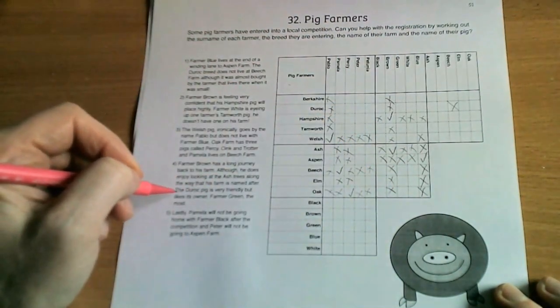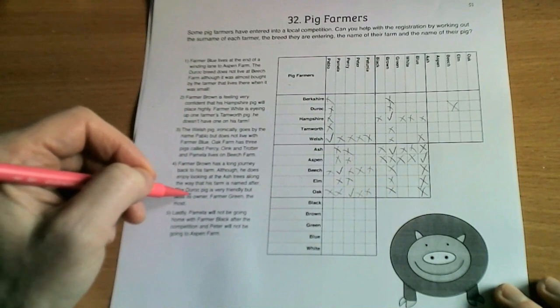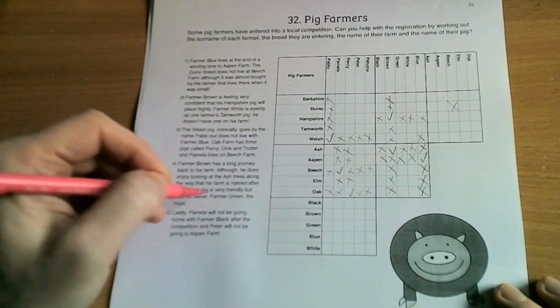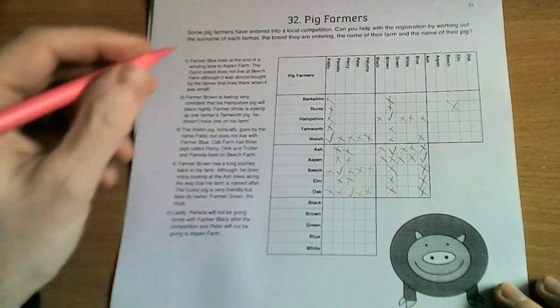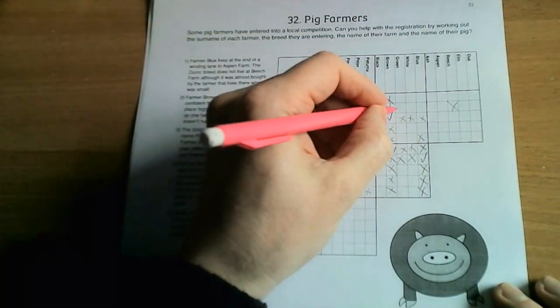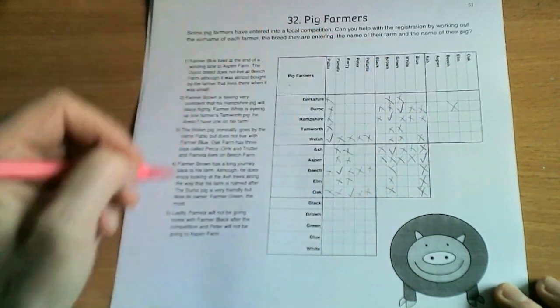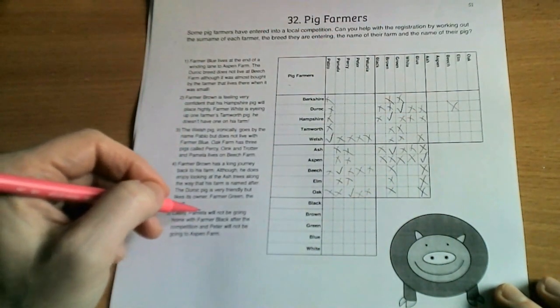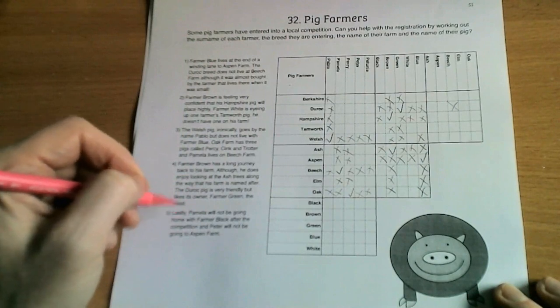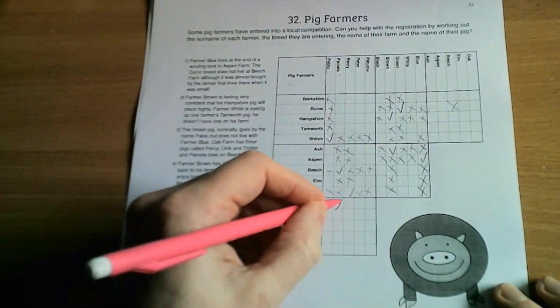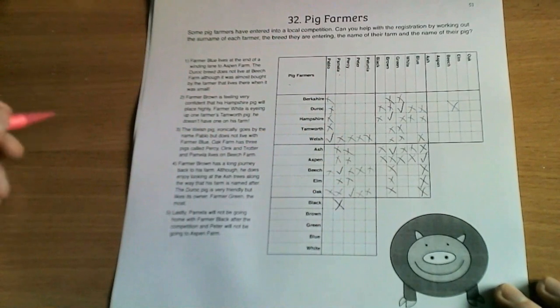Like so. The Duroc pig is very friendly but likes his own Farmer Green the most, so Duroc and Farmer Green. This is filling in nicely. Lastly, Pamela will not be going home with Farmer Black, so Pamela and Black are not linked, so we put the cross there.